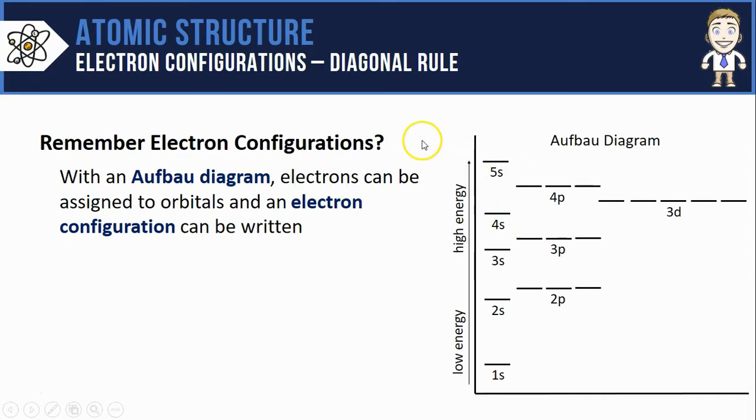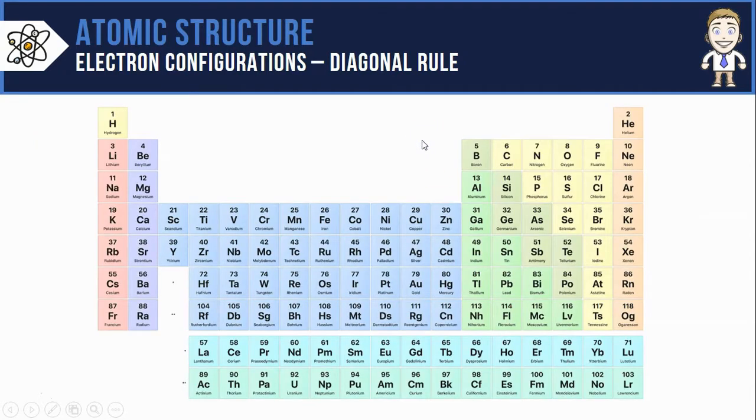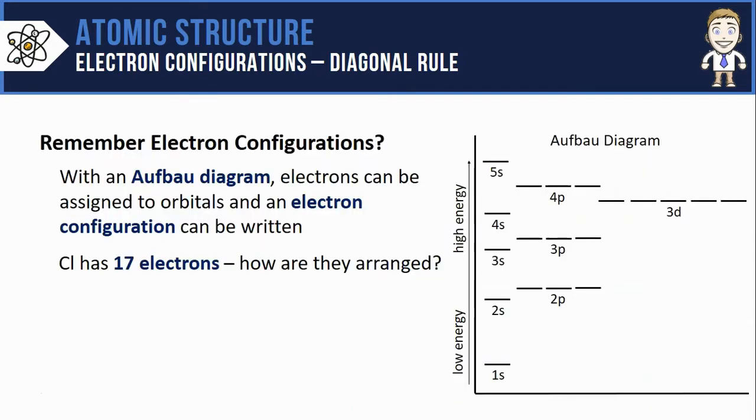Pick any element here, say chlorine with 17 protons and therefore 17 electrons. You could use this to figure out how all 17 electrons are arranged starting at the bottom.